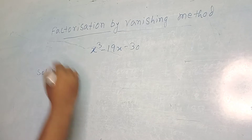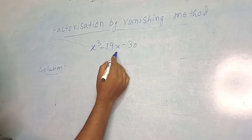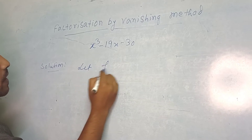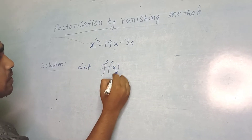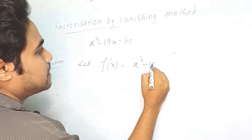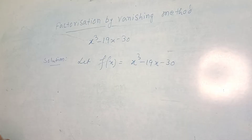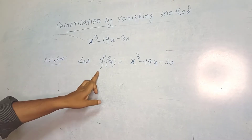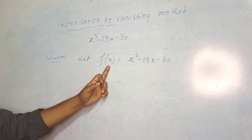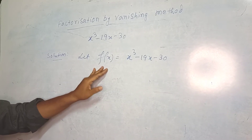So let us take the example x cubed minus 19x minus 30. Let f(x) equal to x cubed minus 19x minus 30. f(x) means function of x.